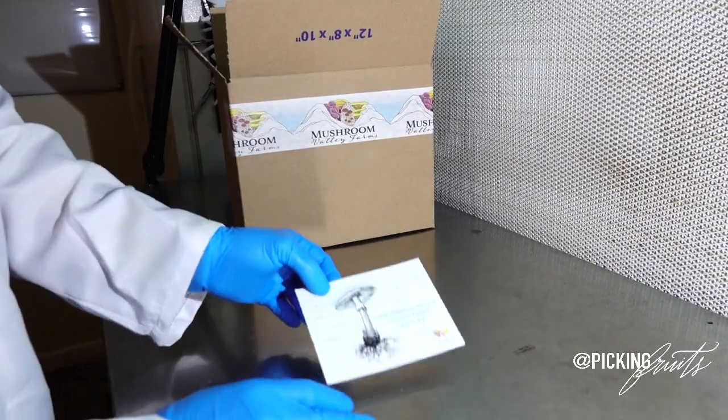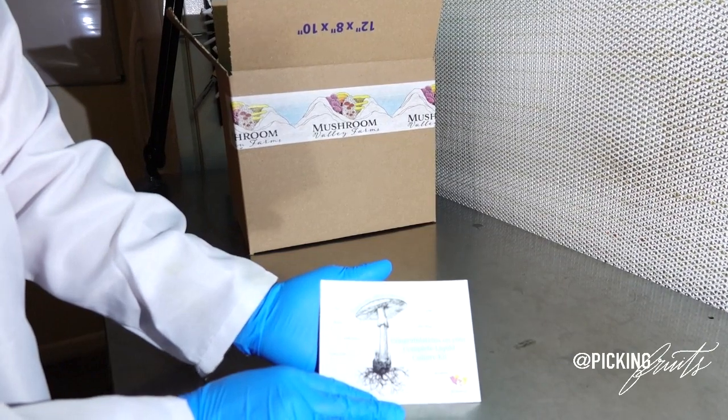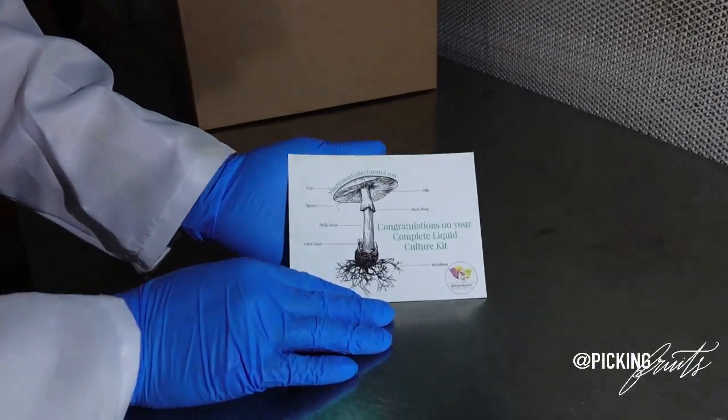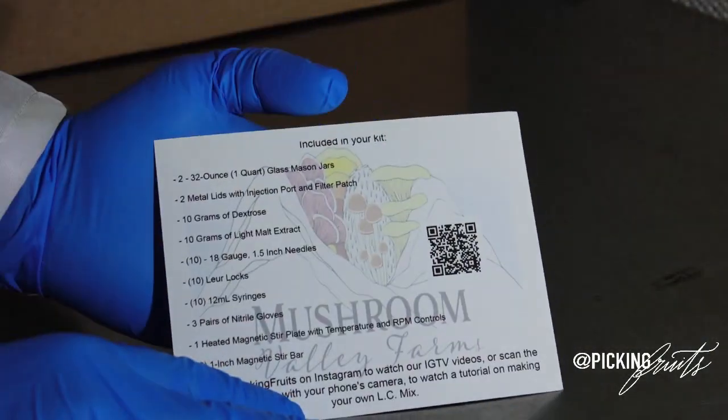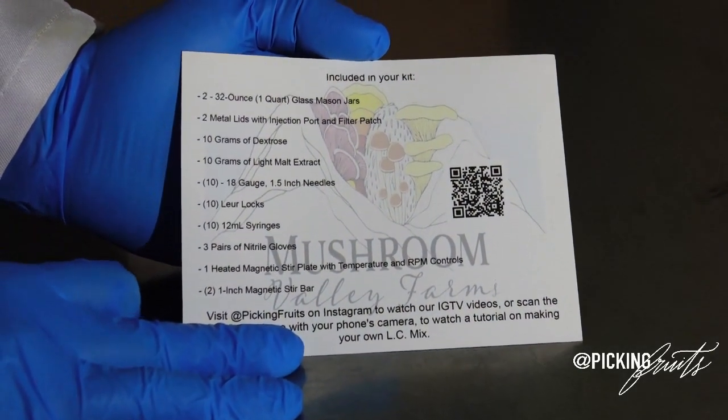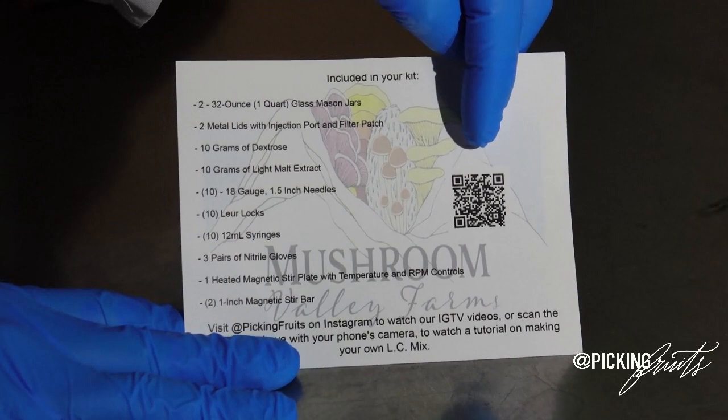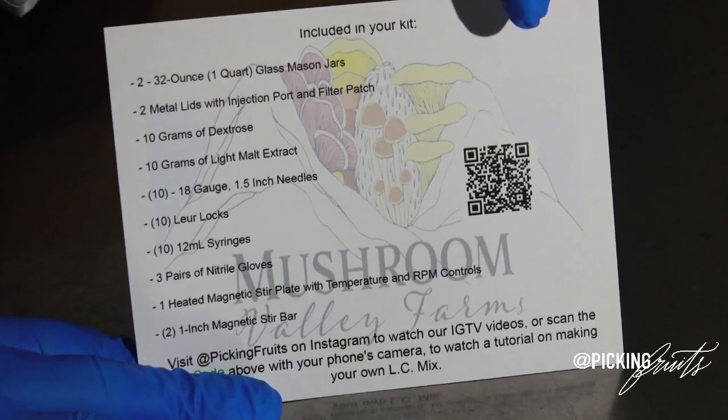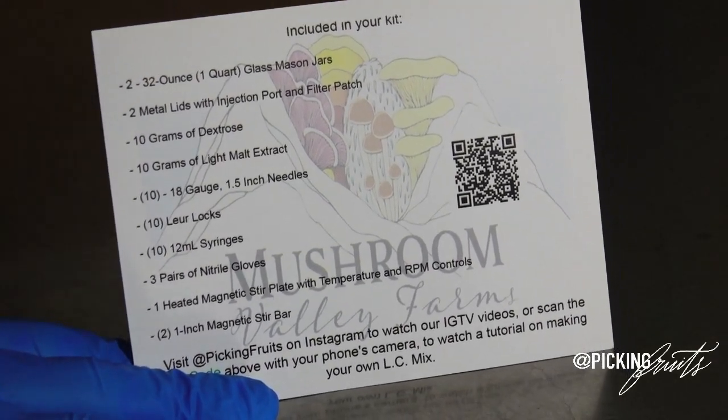The first thing you will find in your box will be this colored postcard. On the back of the postcard you will find a detailed list of all of the items that come inside of the box. You will also find a QR code which will be backlinked to this video so that you can go back and watch the tutorial and make your own LC.